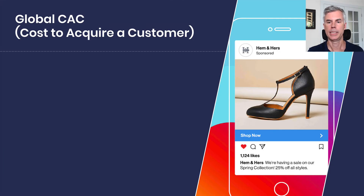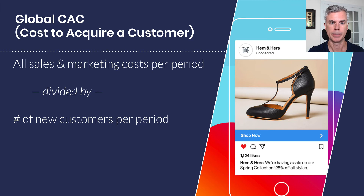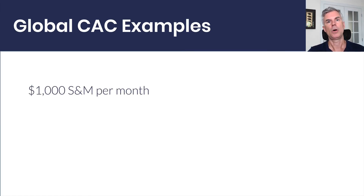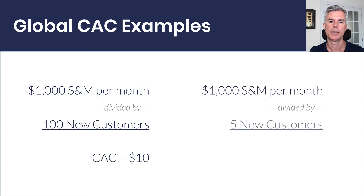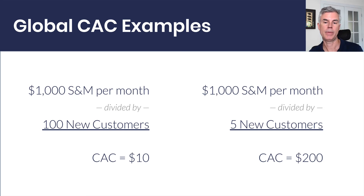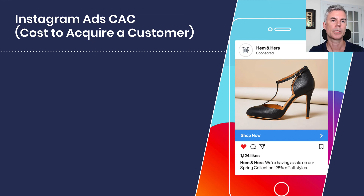Cost to acquire a customer: we're going to look at the global cost, which is all sales and marketing costs for a period divided by the number of new customers attracted during that period. For example, if I spent $1,000 on all sales and marketing — salaries, advertising, an event I'm sponsoring — and I get 100 new customers, my cost to acquire a customer is $10. If I spend that same $1,000 and only acquire five customers, my CAC jumps to $200, so my lifetime value needs to be much higher — we're going for 3x.